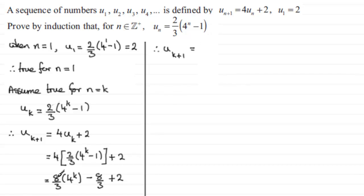we can look at this 8/3 as being made up of 2/3 times 4, that's our 8/3, times 4 to the power k. And then we've got the minus 8/3 plus 2, which is 2 is 6/3. Minus 8/3 plus 6/3 is minus 2/3.